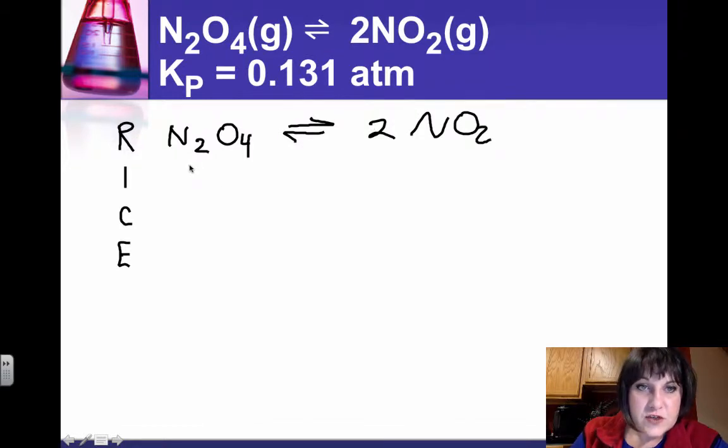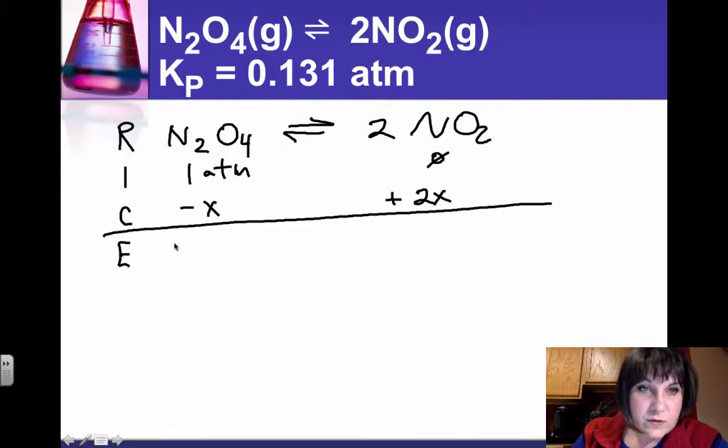And initially, I had one atmosphere of N2O4 and no product yet. That's my initial conditions. As I change, I lose some of my reactants, and at the same time, I gain twice as much moles of my products because of my stoichiometry being one to two. So the equilibrium value will be 1 minus x here and 2x for my product.